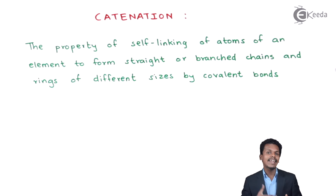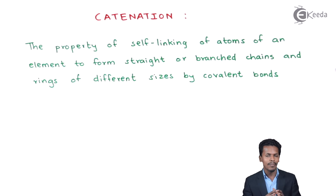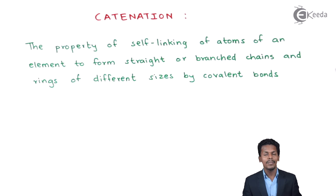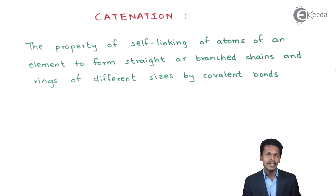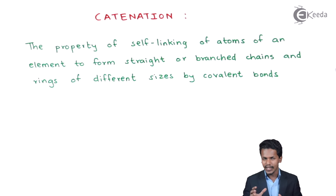Carbon can combine with the same element — carbon itself — to form a straight chain compound, a branched chain compound, or a ring structure. This kind of property exhibited by carbon or any element is known as catenation.